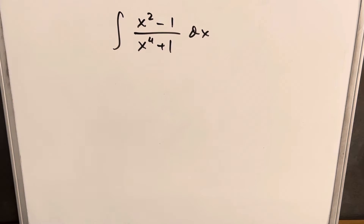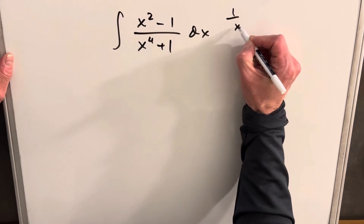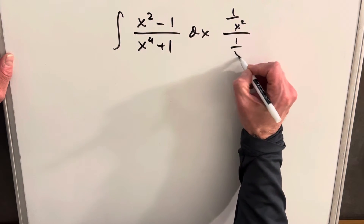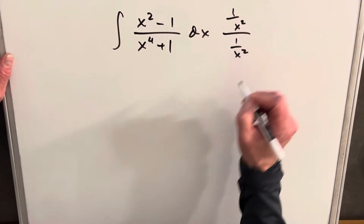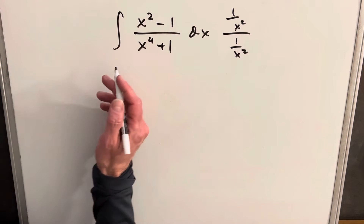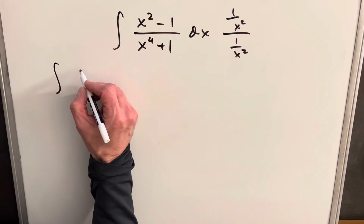What I want to do is something different. I'll try to multiply top and bottom by 1 over x squared. This trick seems to help a lot in many cases, so let's rewrite this and see what we get.